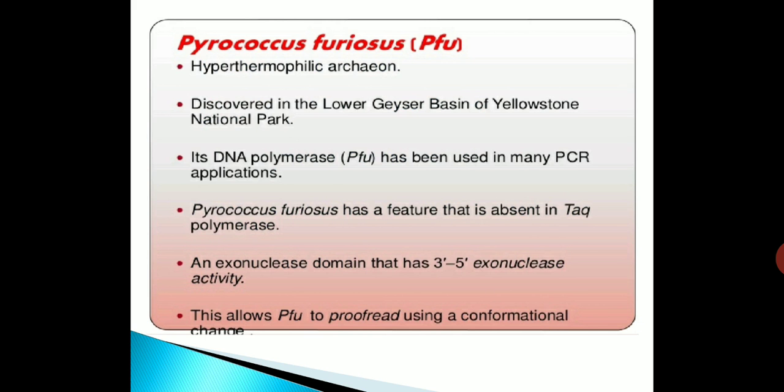Pyrococcus furiosus (PFU) is a hyperthermophile discovered in the lower geyser basin of Yellowstone National Park. Its DNA polymerase — PFU — has been used in many PCR applications. PFU has a feature absent in Taq polymerase: an exonuclease domain with 3-prime to 5-prime exonuclease activity, which allows PFU to proofread using a conformational change.